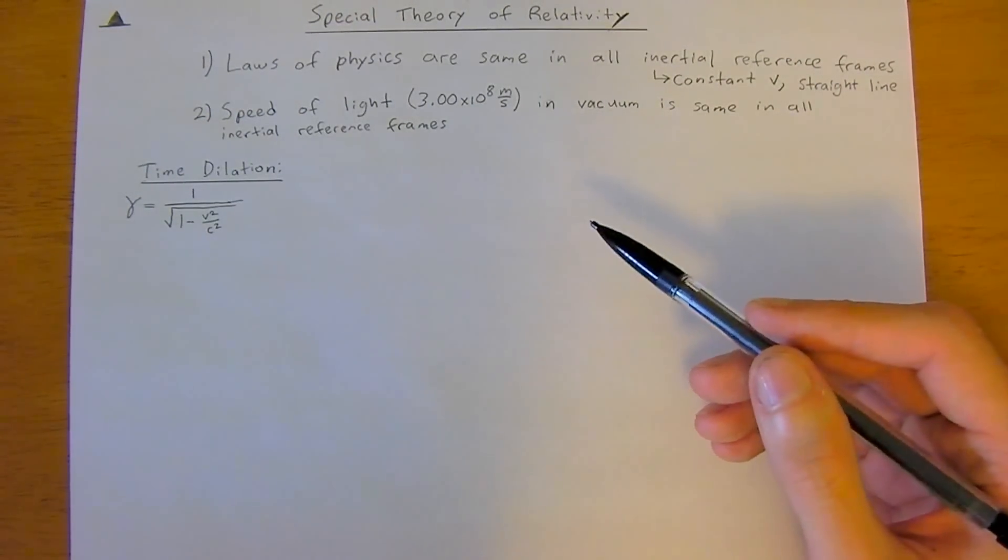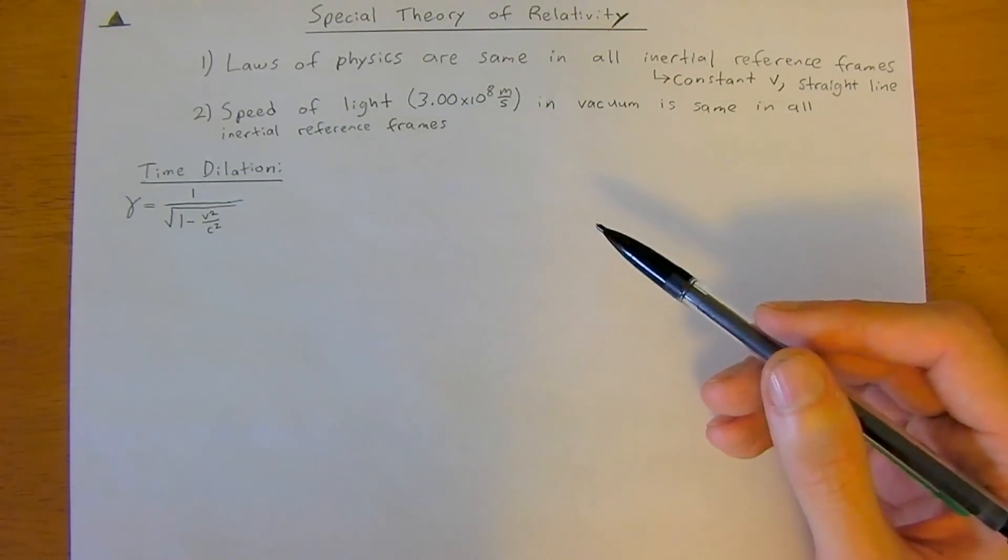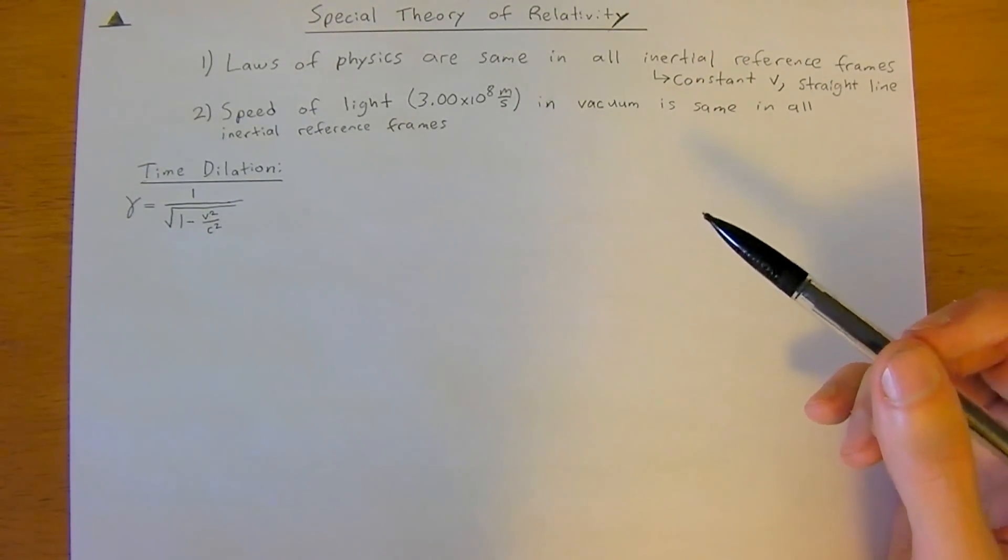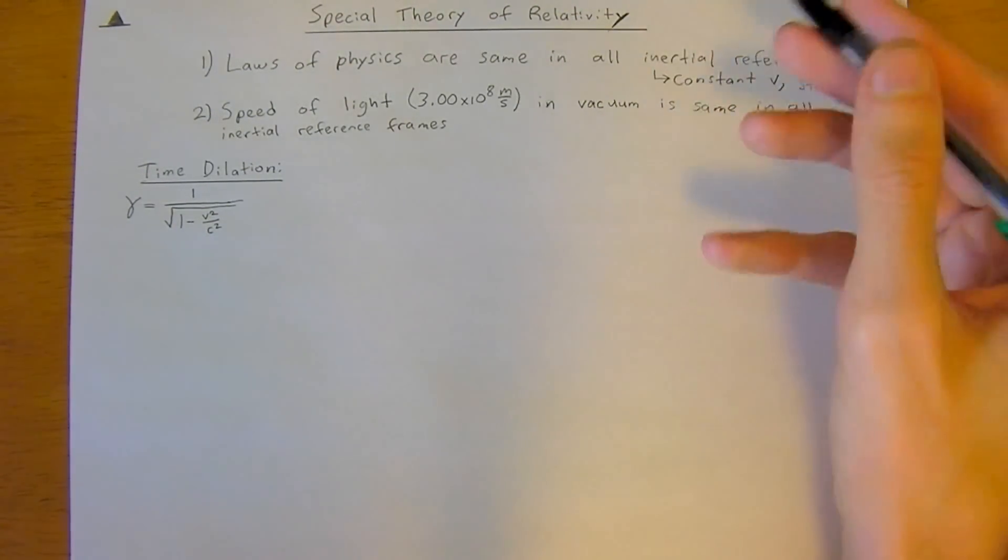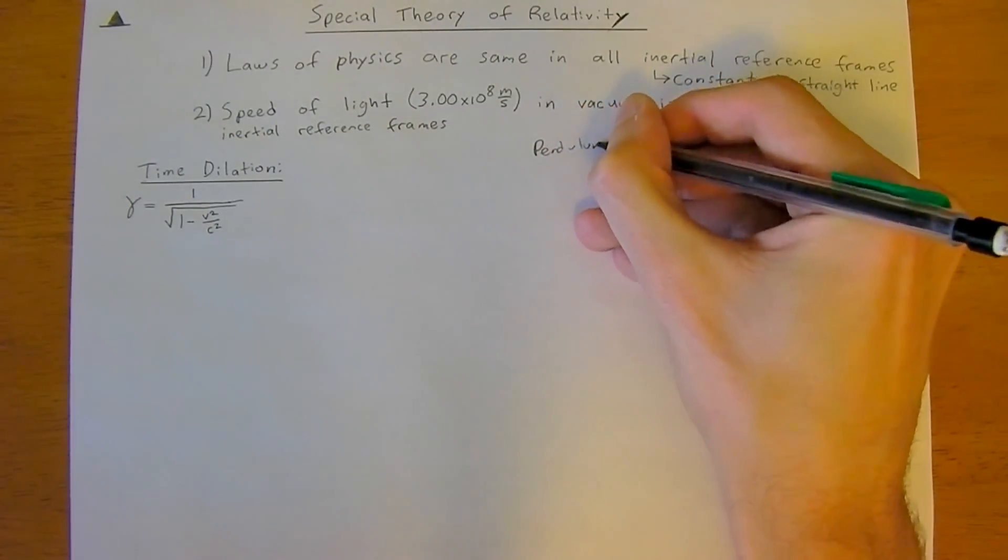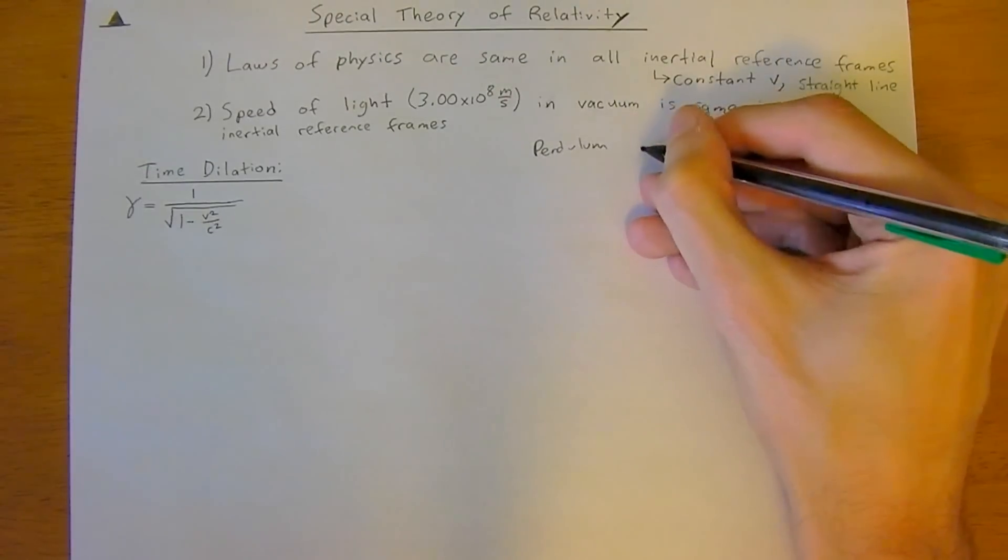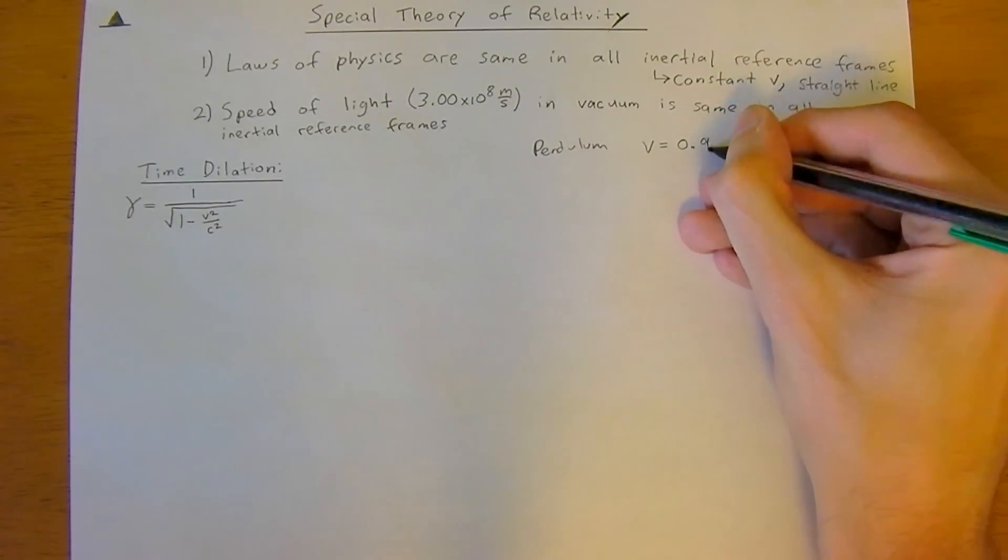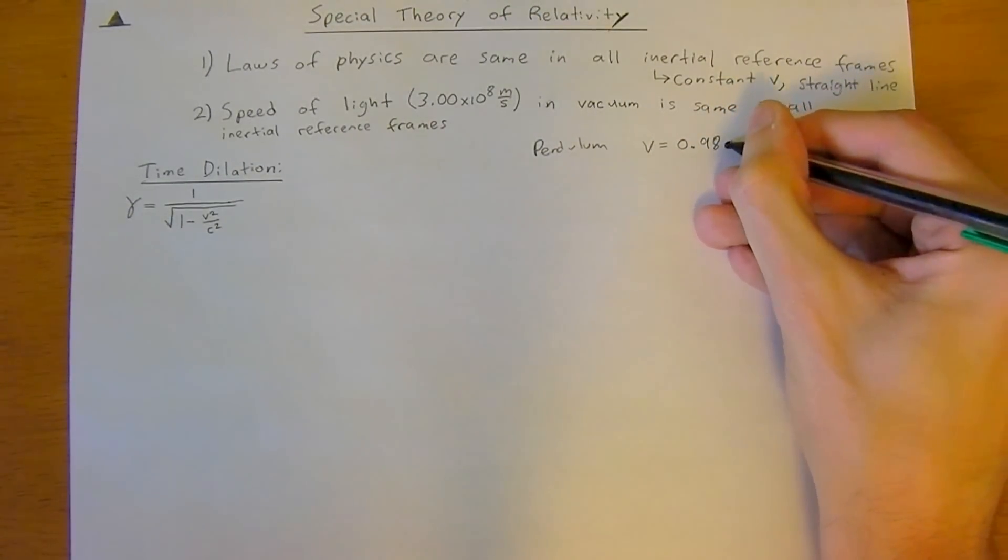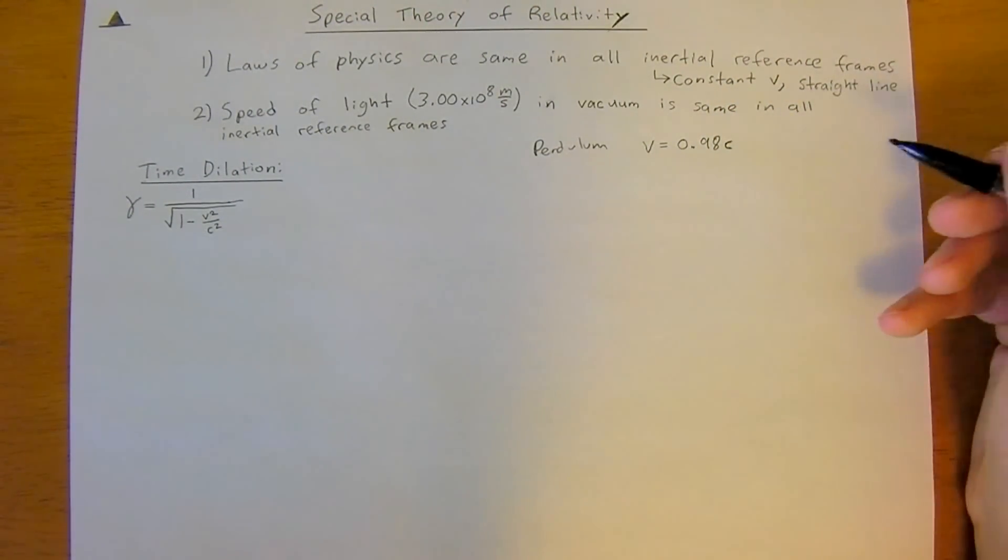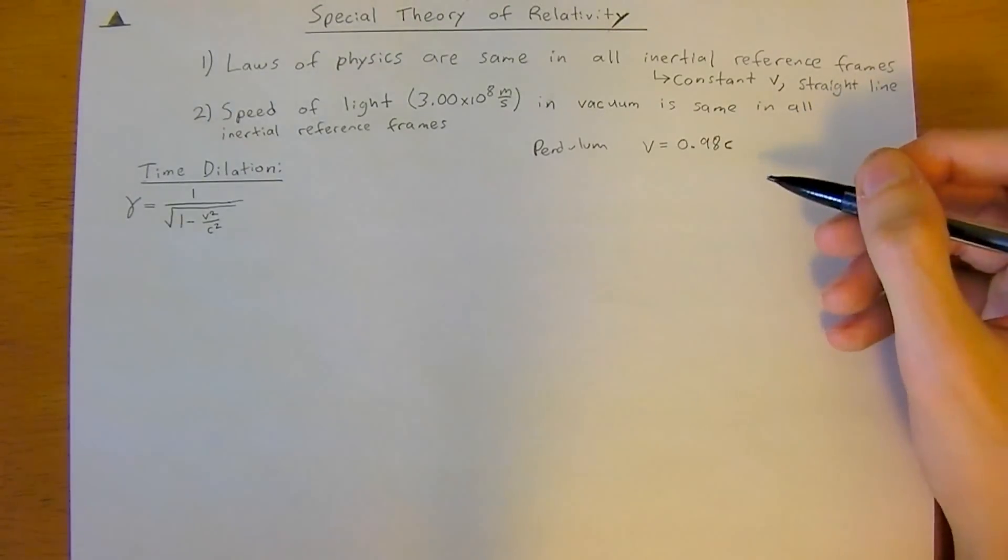So say you have a question, which is what is the period of a pendulum traveling with a velocity of 0.98c. And so this is just 98% times the speed of light. And it really simplifies the equations. That's why we do it in this form.